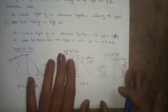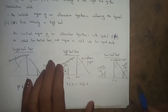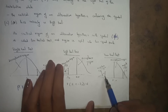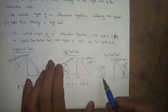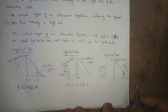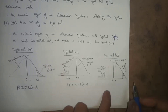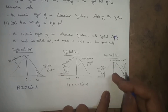For the two-tailed test: with Z=0 at the center of the bell-shaped curve, there are rejected regions on both sides — beyond −Z_alpha on the left and beyond +Z_alpha on the right. The middle portion is the accepted region. This is the two-tailed test.